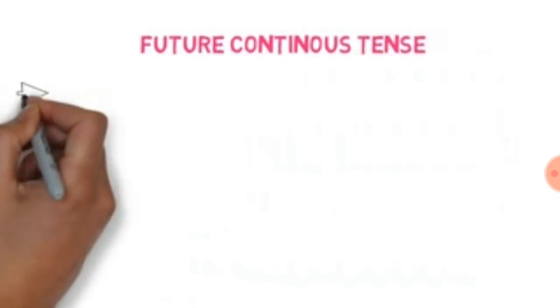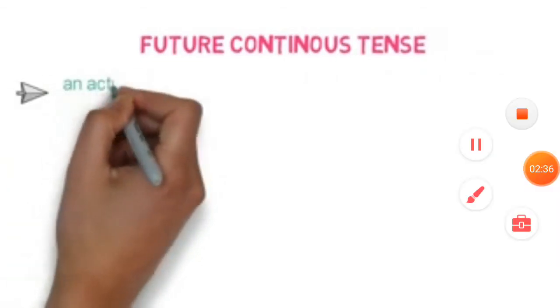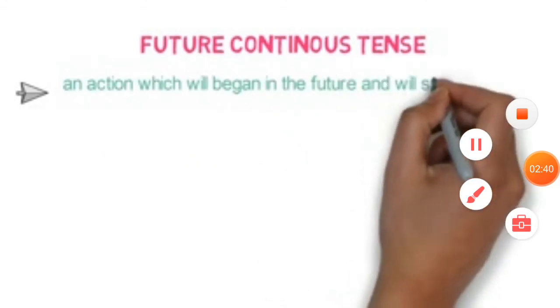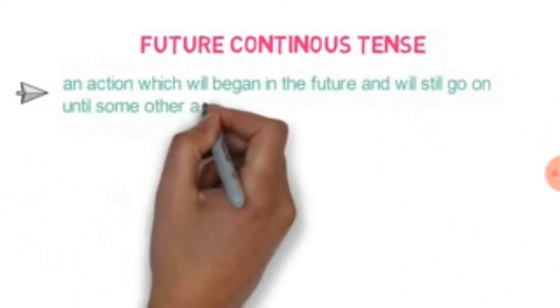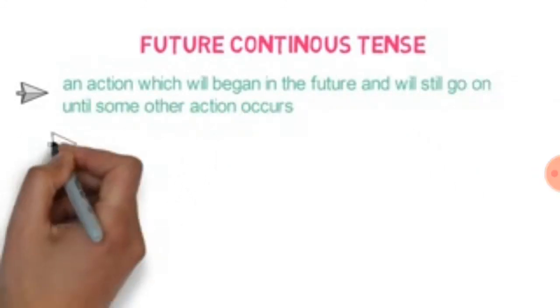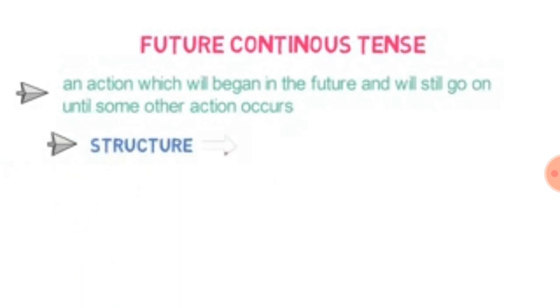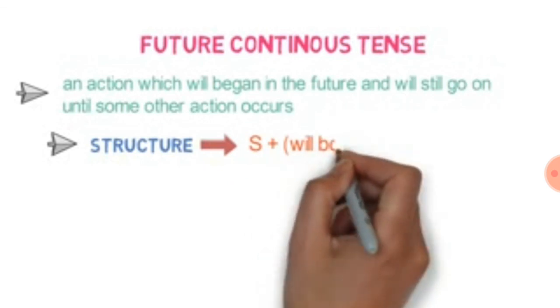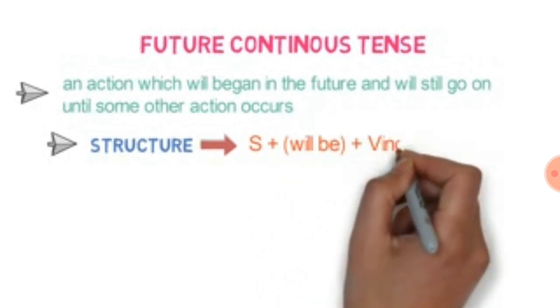Next topic is future continuous. An action will begin in the future and will still be going on until some other action. We will do this in the future. So the structure is the subject plus will be plus verb plus ing plus object.